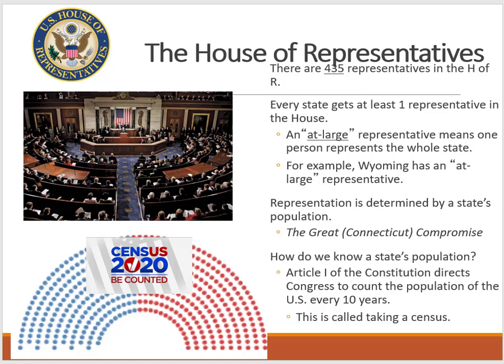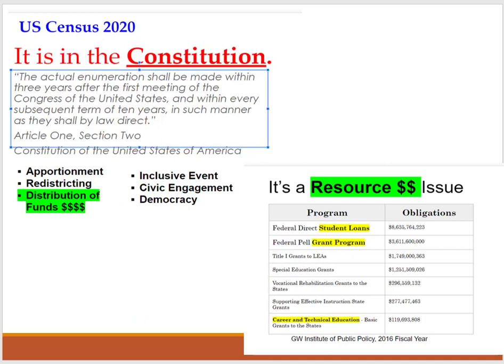How do we know a state's population? Article 1 of the Constitution specifically directs Congress to count the population every 10 years — this is called taking the census. Article 1 Section 2 mentions taking the census, and we just completed our 2020 census. Beyond representation, the census is important for apportionment, redistricting, civic engagement, and also distribution of funds.